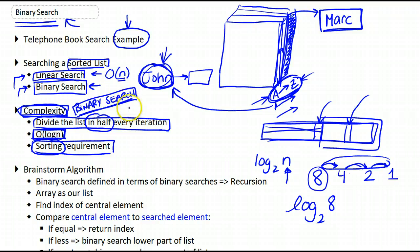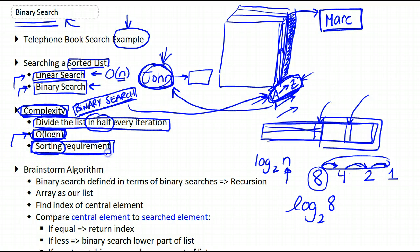Binary search works because we are exploiting the property of the order of the elements. If there was no order that existed on the list, then we cannot use binary search. So just keep that in mind. There is a very considerable advantage to using binary search, but there is, of course, the sorting requirement. But sometimes we are dealing with lists that are always sorted in a program, and in these cases it is much more advantageous to use binary search than to use anything else.